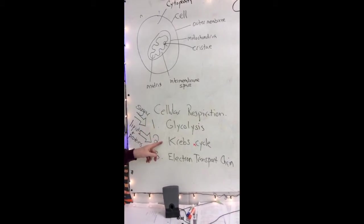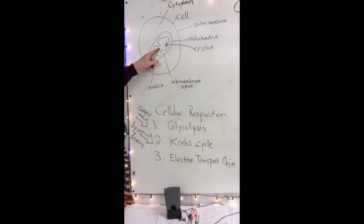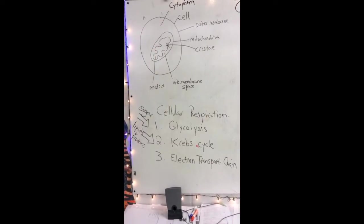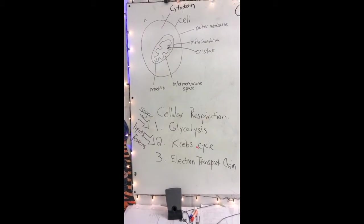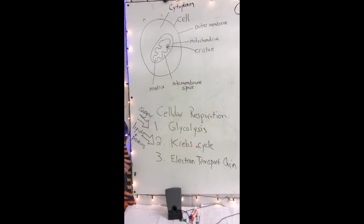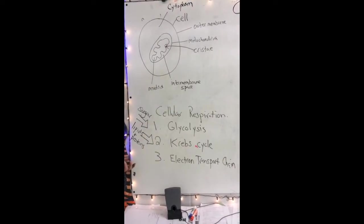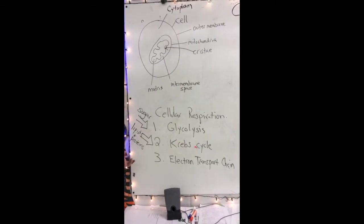The second step is the Krebs cycle. It takes place in the matrix of the mitochondria. It generates a little ATP also, but is more important because of the high energy molecules that it produces and sends to the electron transport chain.